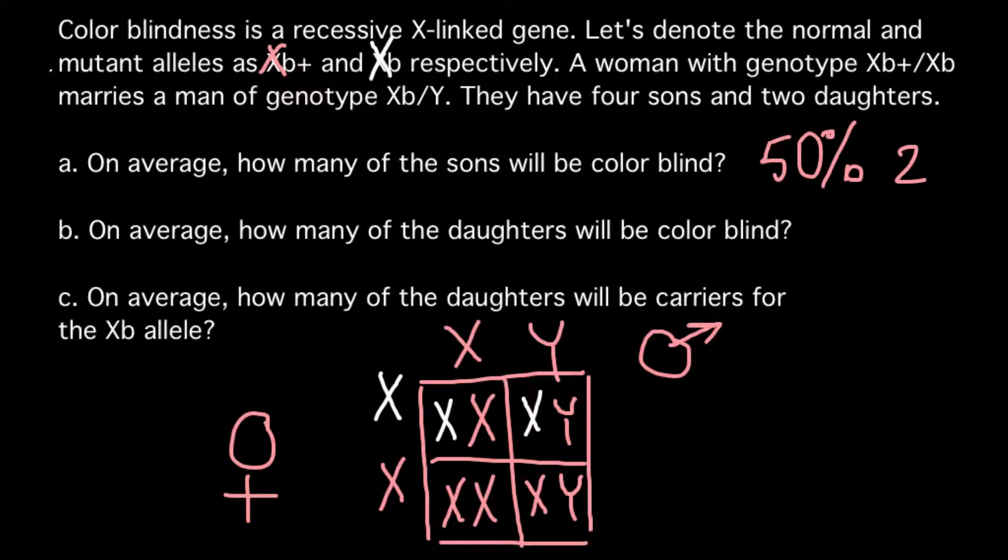So question B: On average how many of the daughters will be color blind? And here we have daughters. As you see, here we have a daughter who is going to be a carrier but wouldn't be affected with genetic disorder because she has one normal X chromosome, or actually one normal allele of the defective gene that can be found on this chromosome.